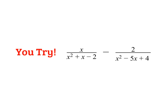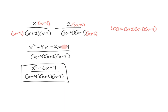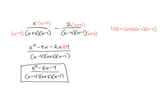Go ahead and pause the video and give this problem a try. Then check your work: first factor, then find the LCD and multiply by the missing factors. Once you have a common denominator, combine the two fractions and simplify in the numerator. List your restrictions: X cannot equal positive 4, negative 2, and positive 1.